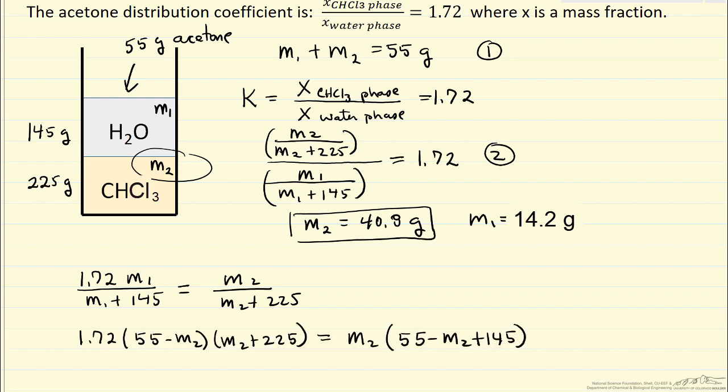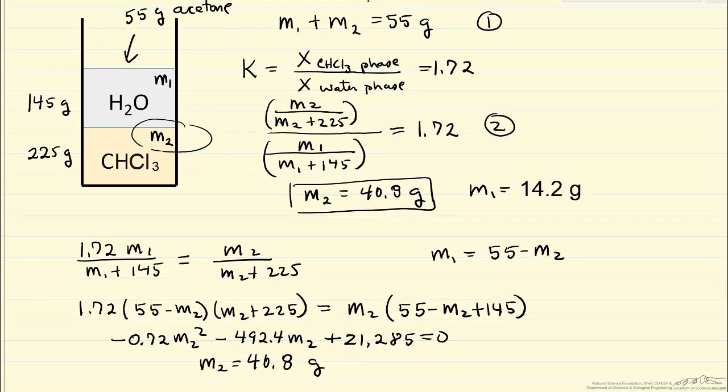So here I just made the substitution that M1 is 55 minus M2. If I multiply this out, I get a quadratic equation. I've written down the quadratic equation and solved it. I ended up using the ChemE HD app that's available for phones. It makes it easy to solve quadratic equations.